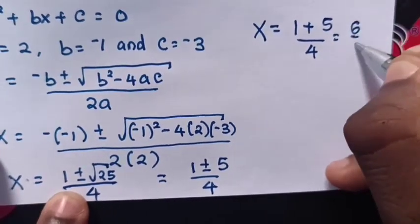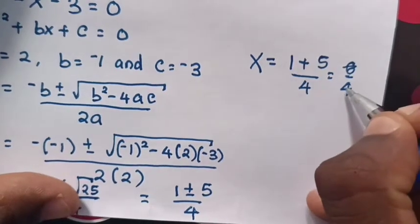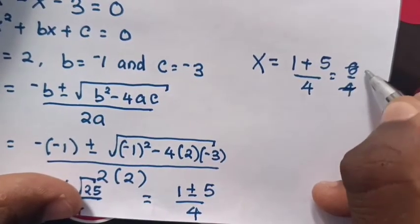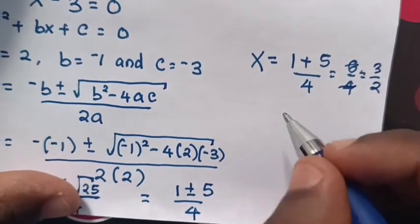Which equals 6 over 4. When we simplify it by 2, it will be 3 over 2. So x is 3 over 2.